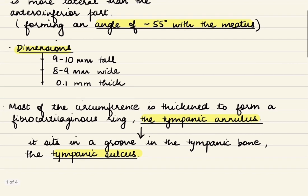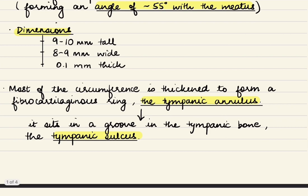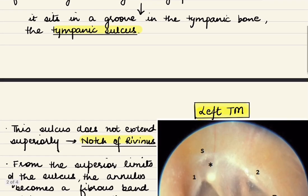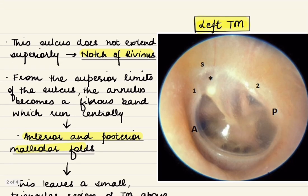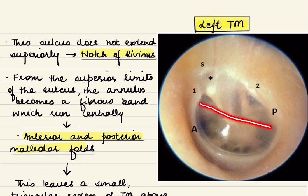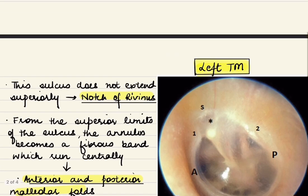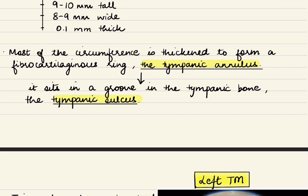Coming to the dimensions of tympanic membrane, the longest diameter is around 9 to 10 millimeters with the shortest being 8 to 9 millimeters. The longest diameter is from the posterior superior area to the anterior inferior area, whereas the shortest one is perpendicular to this line. The thickness of tympanic membrane is 0.1 millimeters.